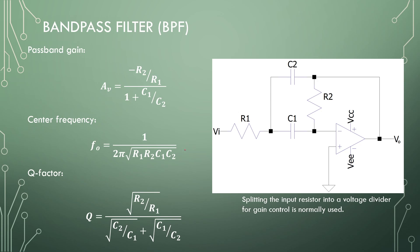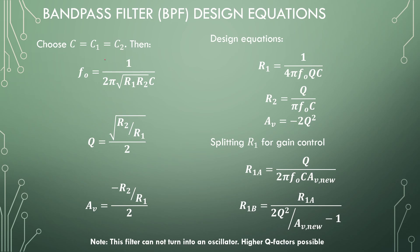To get to design equations, we can pick certain components to be the same. But since everything is interdependent, we can't select all the resistors to be the same. The choice is typically to choose the capacitors of the same value, which reduces the center frequency equation to one dependent on the root of the two resistors multiplied by the capacitor. The Q factor is dependent on the two resistors, and the final gain is dependent on the two resistors.